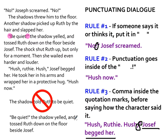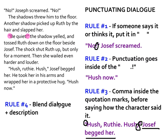The last thing I need to see you do with dialogue is really blend dialogue and description. Notice here: "Be quiet," the shadow yelled, and then we see the shadow tossing Ruth down on the floor beside Joseph. The shock shut Ruth up, but only for a moment — then she wailed even harder and louder. The author is not just having a whole page of people talking — that's boring. We want to see you blend dialogue and descriptive writing, dialogue and imagery, dialogue and slowing down time. Really blend those other tools with your use of dialogue.